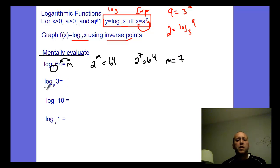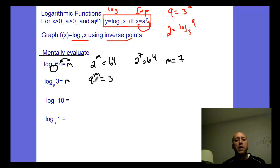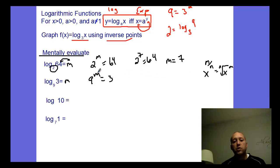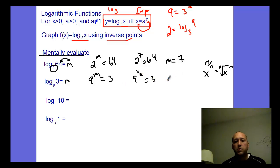We can do the same thing with these other examples. Let them all equal m. For log base nine of three: nine to the m equals three. How do we go from a big number to a smaller number with an exponent? Using exponent rules: any value x to a fractional power is the nth root of x to the nth power. To make that smaller, we need a fractional exponent. The square root of nine is three, so nine to the one-half power equals three. Therefore m is one-half.